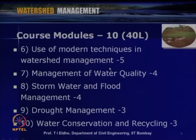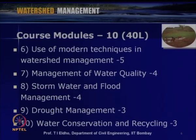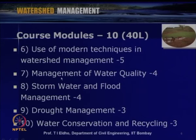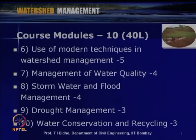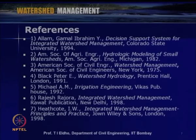In the sixth module, we will discuss the use of modern techniques in watershed management, including remote sensing techniques, geographic information systems, computer models, and decision support systems. This module will have five lectures. The seventh module will be on Management of Water Quality, with four lectures. The eighth module will be on Storm Water and Flood Management, discussing floods and droughts as major issues. The ninth module will cover drought management within a watershed. The last module, the tenth, will be on Water Conservation and Recycling, with about three lectures.